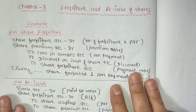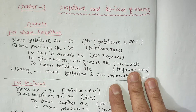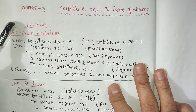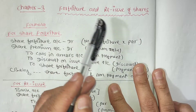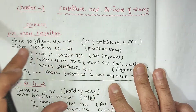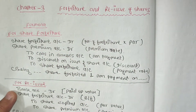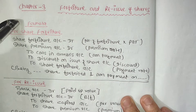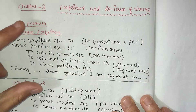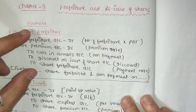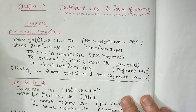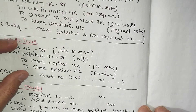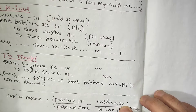Hello everyone, welcome to our secret education YouTube channel. In this video, we are going to talk about the Class 2 bill account subject of Chapter 3. This chapter will be done with a numerical video for the exam. I will show you the concept of this chapter — the summary of the journal, share journal, reissue of the journal, and transfer journal.